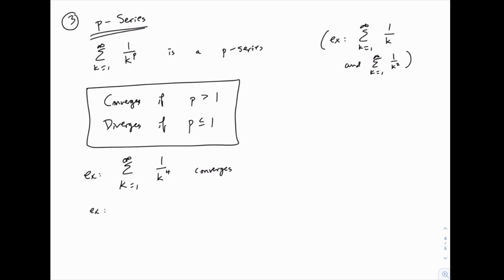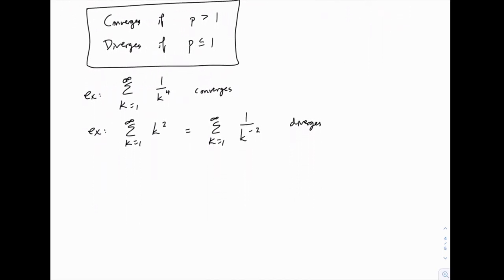There are other ones we can write in this form. So for example, k squared is not initially written in that form, but we could write this as 1 over k to the power of negative 2, with a little algebra. And in that case, notice that p is negative 2, which is less than or equal to 1, so this clearly diverges. And we probably didn't need to even do that. k squared obviously diverges by the divergence test, because those terms are not going to 0. But you can also check it by the p-series test.